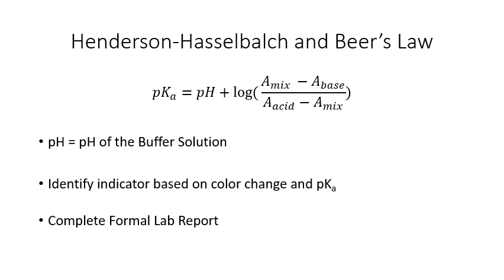We're going to use a combination of Henderson-Hasselbalch equation and Beer's law in order to determine our pKa. The pH that you're going to use is going to be the pH of the buffer solution. The absorbances that are in this equation are going to be from your spectrum that was collected. The goal is to identify the indicator based on the color changes that you see. So the colors of the different acidic, basic and mixture forms and also the pKa that you identify.